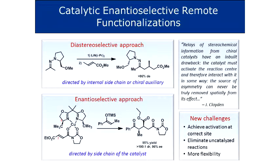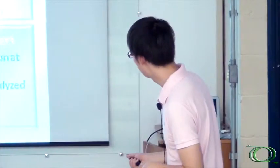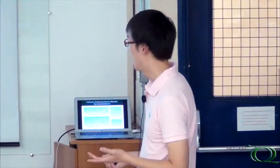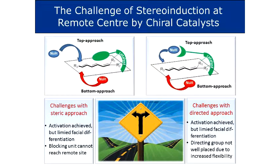The new challenge is to achieve activation at the correct site. One problem is that you can have activation that is not stereoselective — the catalyst can activate the substrate but cannot shield or direct the approach of a nucleophile or electrophile. This adds another layer of complexity on top of regio-selectivity. Going back to the simple scheme, the longer the arm, the more flexible it gets, and the more conformations it can adopt, challenging the effectiveness of blocking at the remote site.